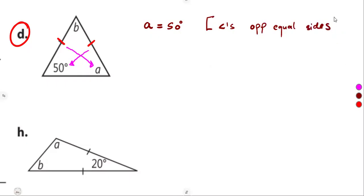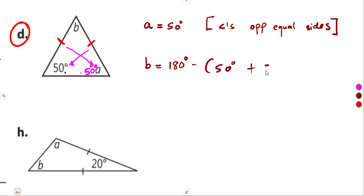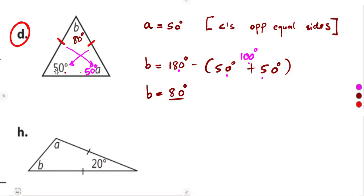Since angle A is 50 degrees, angle B can be calculated using the angles-in-a-triangle rule. We subtract both equal angles: 180 minus (50 plus 50) equals 180 minus 100, which gives us 80 degrees. So angle B is 80 degrees. If you add all three angles you must get 180 degrees.